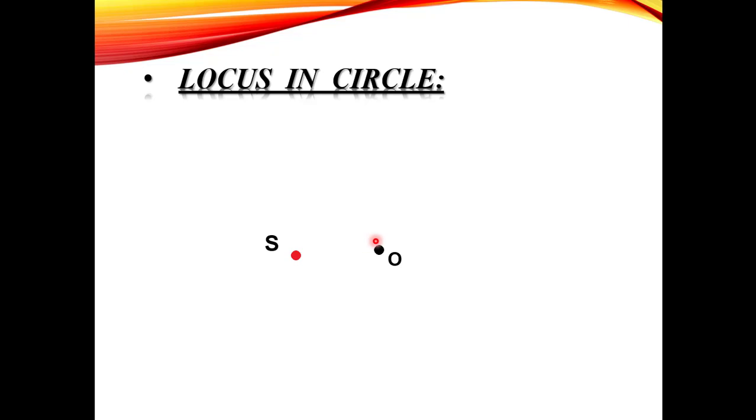मैंने एक Point Consider कर लिया, इस Point को नाम दिया O। इससे कुछ Distance के फासले पर मैंने एक Point लिया, जिसका नाम S है। यहाँ से यहाँ तक का Distance मैंने 5 cm मान लिया है। फिर मैंने एक दूसरा Point लिया, जिसका नाम Q है, और यह भी O से 5 cm के फासले पर है।